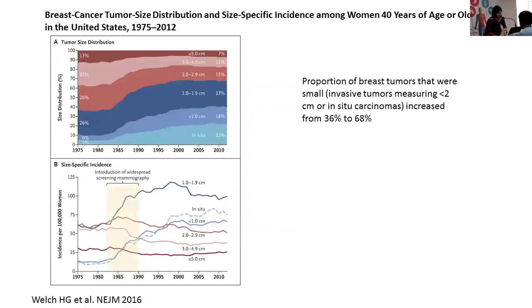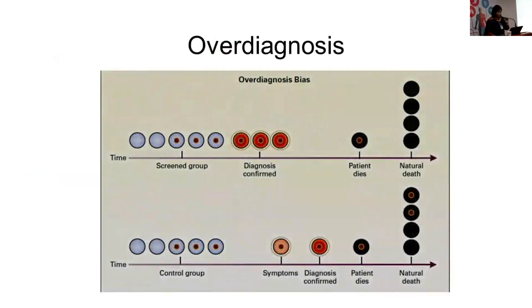Looking at tumor size and incidence in patients over 40: tumors larger than 2 cm decreased as a proportion, but mainly because many more smaller tumors are now being detected rather than numerically fewer large tumors. This leads to the concept of over-diagnosis — detecting tumors that are indolent and would never have been diagnosed; the patient would have died with the tumor without ever realizing they had cancer.